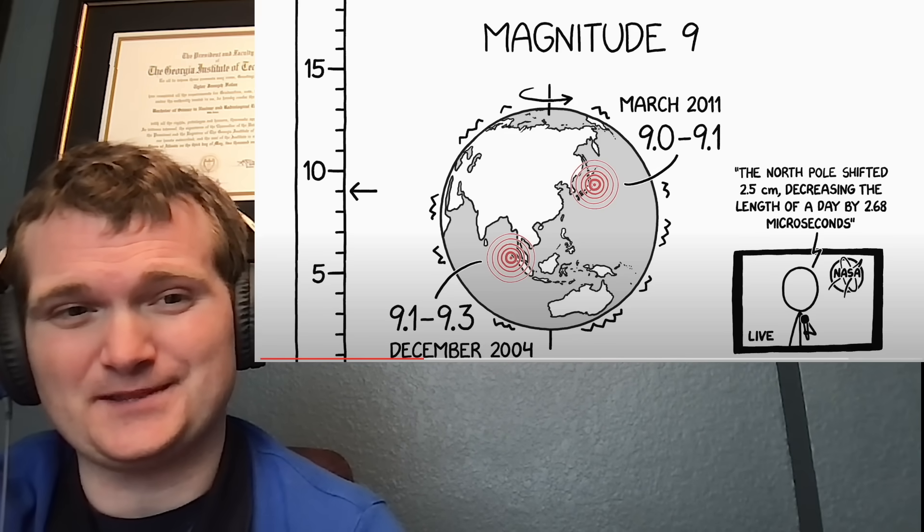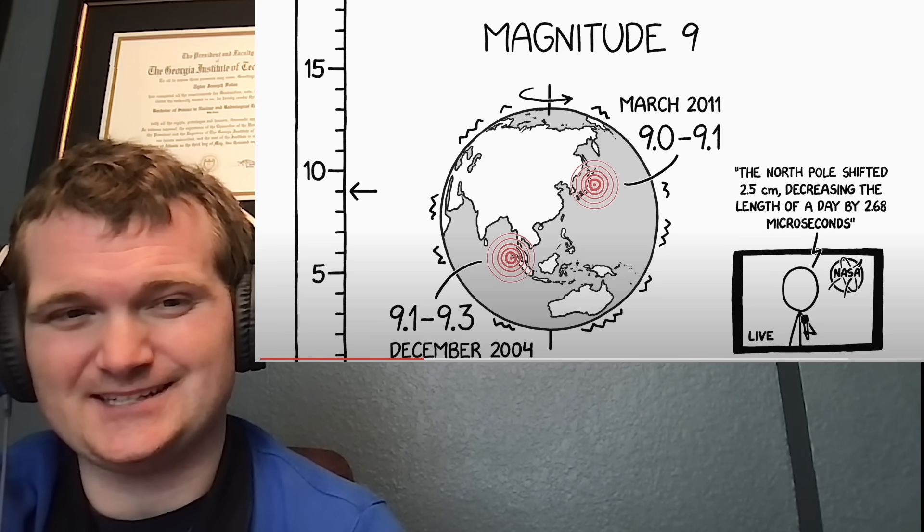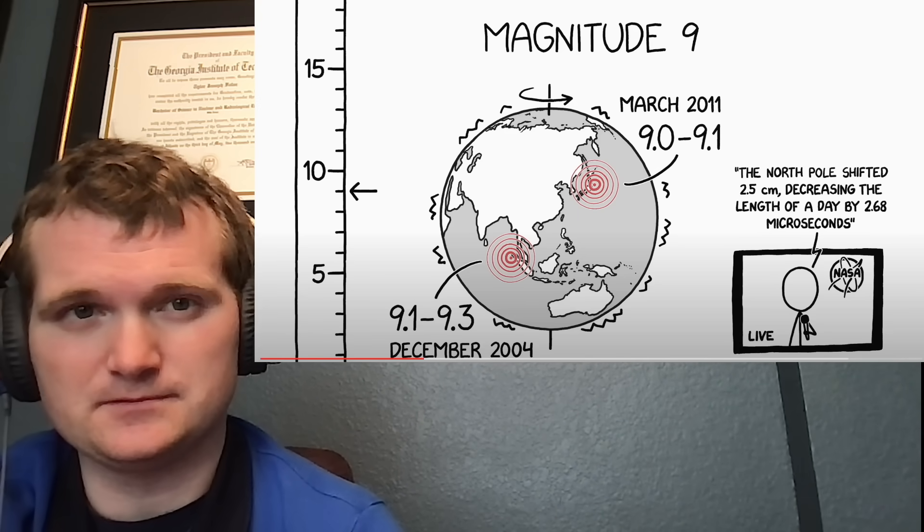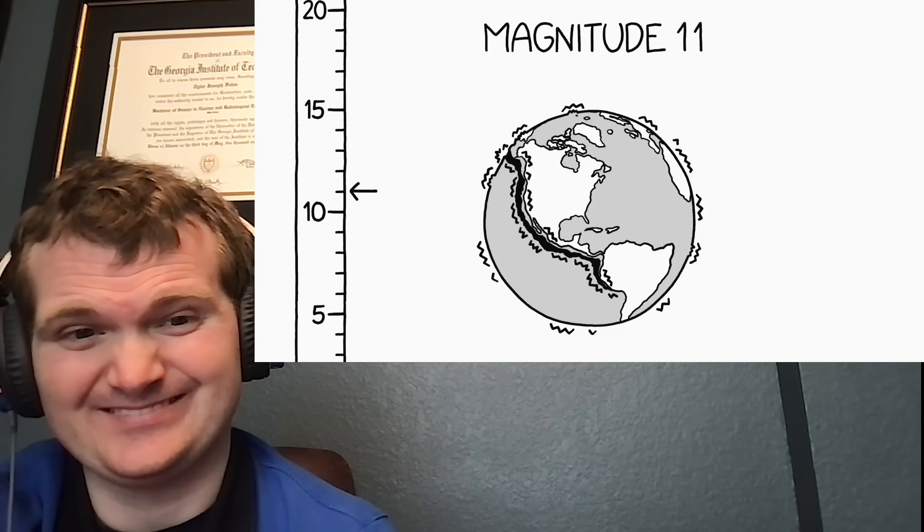And we mentioned 10 might as well be the top. I don't know if there's an actual fault line on Earth that could possibly give you a 10, because 10 is so much bigger than a 9. In order to get to magnitude 10, you'd need a ruptured fault line 3,500 kilometers long. Yeah. And a magnitude 11 quake would require a fault that went halfway around the world.